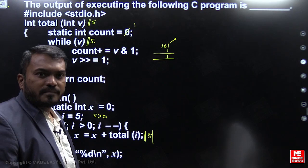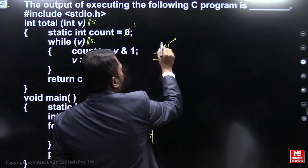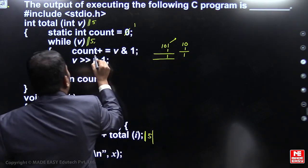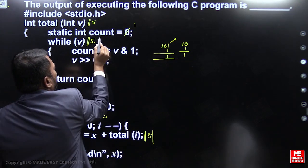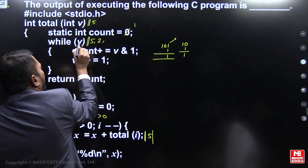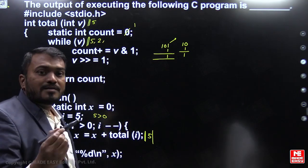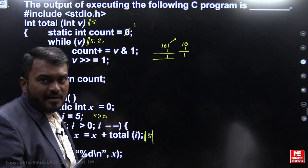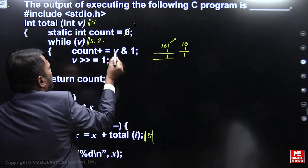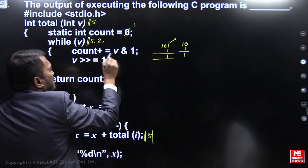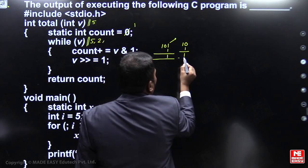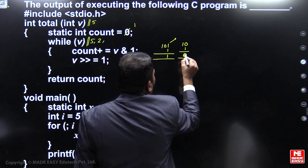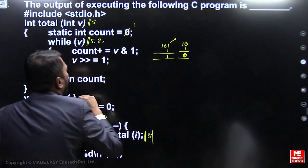After right-shifting 5 (101) by 1, we get 10 in binary, which is 2. While v: 2 is non-zero, so it's true, and we go inside. count equal to count plus (v AND 1): 2 in binary is 10. 0 AND 1 gives 0, so zero is added to count — no change.